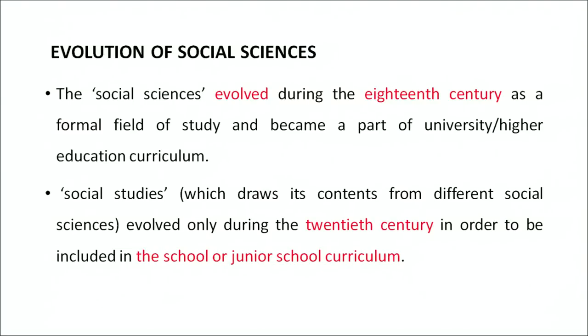Let us look into the evolution of Social Sciences. Social Sciences, as a formal field of study, evolved during the 18th century and became part of university higher education curriculum — not in India but in Europe and other places. Social Studies, which draws its contents from different social sciences, evolved only during the 20th century. This is a major difference between Social Science and Social Studies.